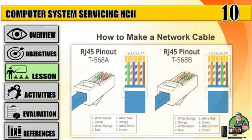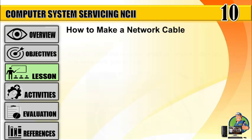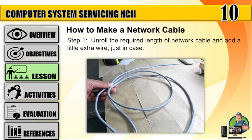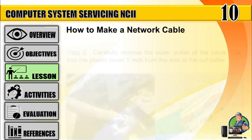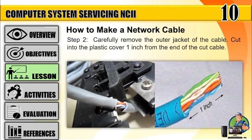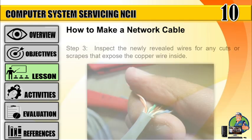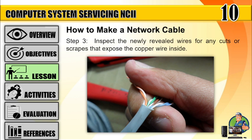How to make a network cable. Step 1: Unroll the required length of network cable and add a little extra wire, just in case. Step 2: Carefully remove the outer jacket of the cable. Cut into the plastic cover 1 inch from the end of the cut cable. Step 3: Inspect the newly revealed wires for any cuts or scrapes that expose the copper wire inside.